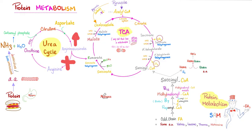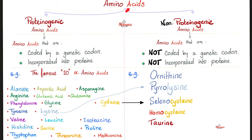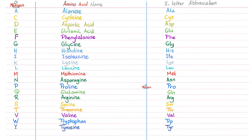This is the utility of amino acid profiles in diagnosing inborn errors of metabolism. The proteogenic amino acids are the ones coded by your genetic code and incorporated into proteins. In humans, these are the famous 20 amino acids. Each one has a name, a three-letter abbreviation, and a one-letter abbreviation. Please pause and review.